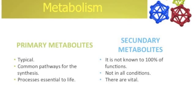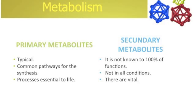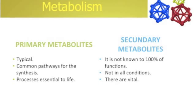In the vegetal kingdom, there exist two types of metabolites: the primary metabolites and the secondary metabolites. In each one, the production process is very different.